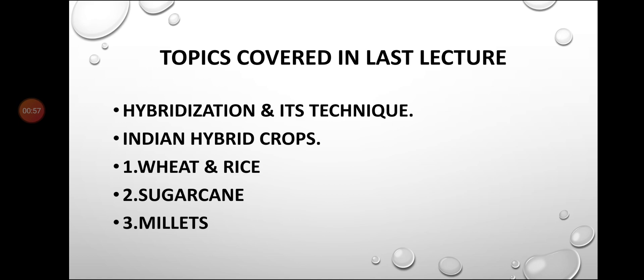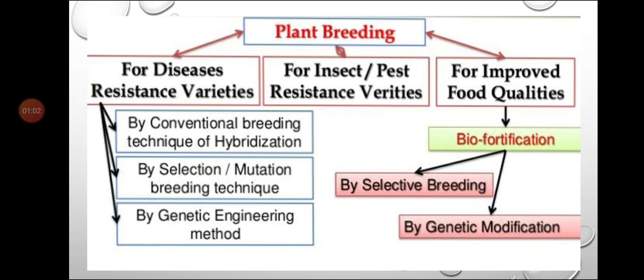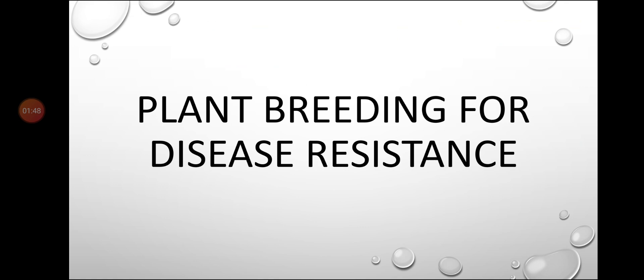We studied how improvement happened in these crop varieties because of hybridization techniques. Today we are going to study plant breeding for disease resistant varieties, which can be done by conventional hybridization, mutation breeding, and genetic engineering methods. We will also study plant breeding for insect and pest resistant varieties, and plant breeding for improved food qualities through biofortification.